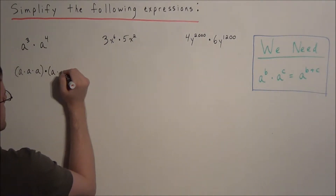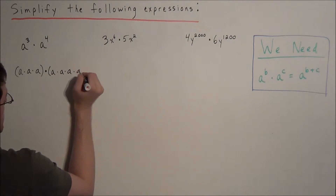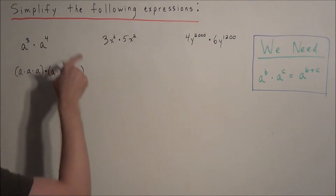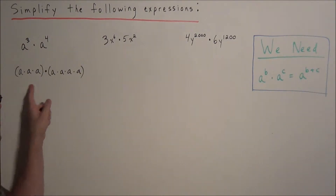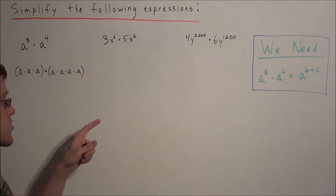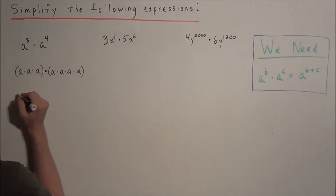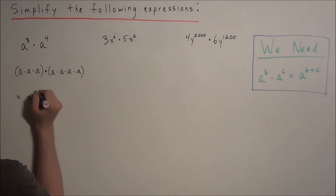a times a times a times a, which models a to the fourth power. Now we have a string of seven a's all attached by multiplication, so we know that this equals a to the seventh power.